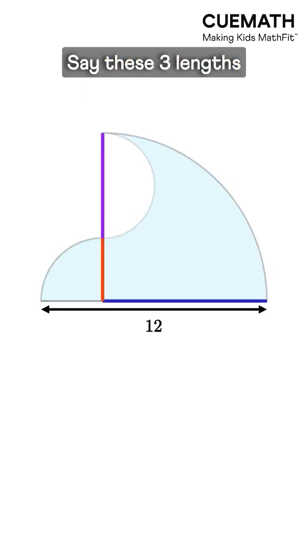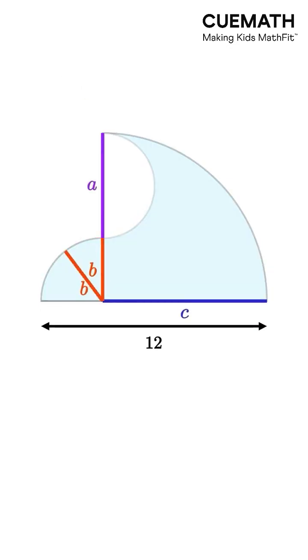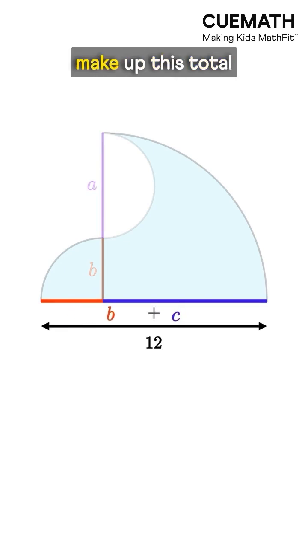Say these three lengths are A, B, and C. B and C together make up this total length, so their sum must be 12.